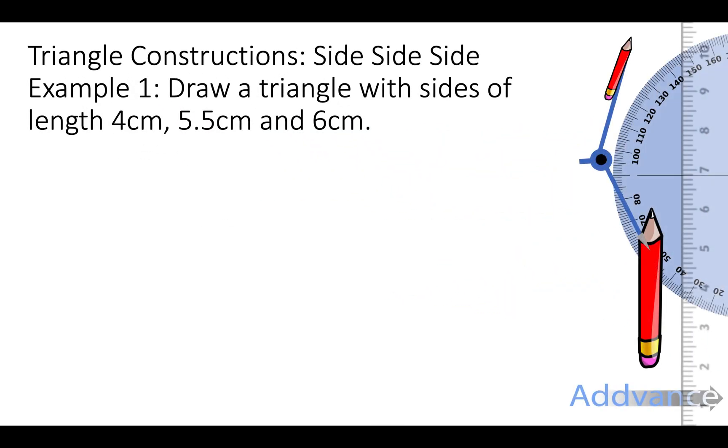So straight away let's see an example. It says we're going to draw a triangle with sides of length 4cm, 5.5cm and 6cm. This is a side, side, side question where you are asked to draw a triangle where you're given all three sides, or SSS for short.